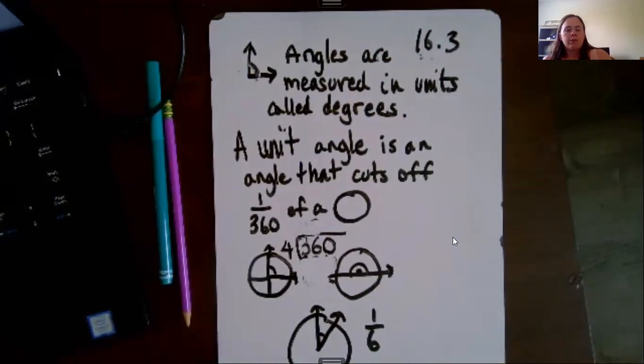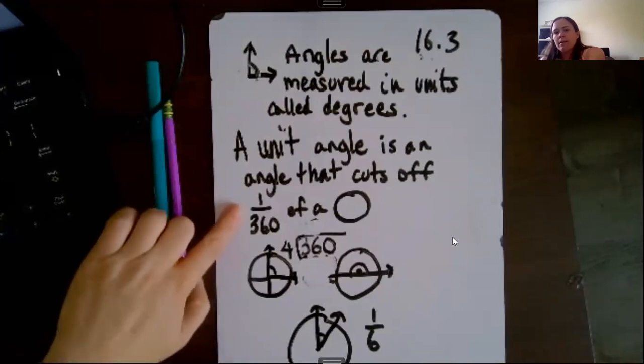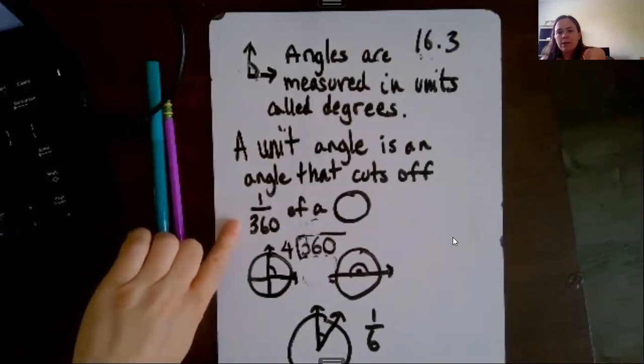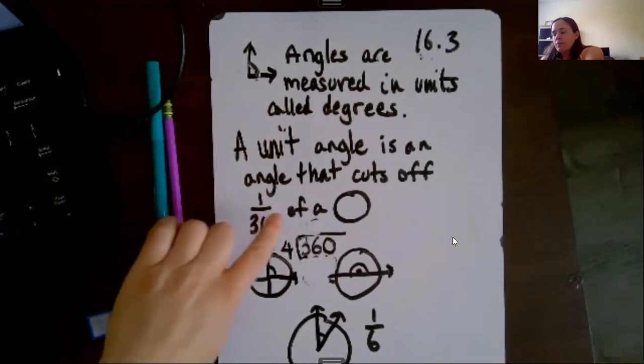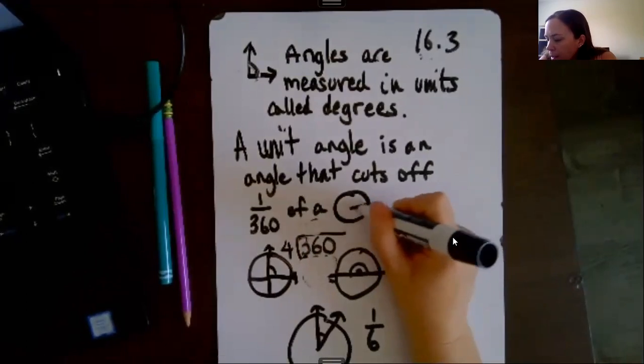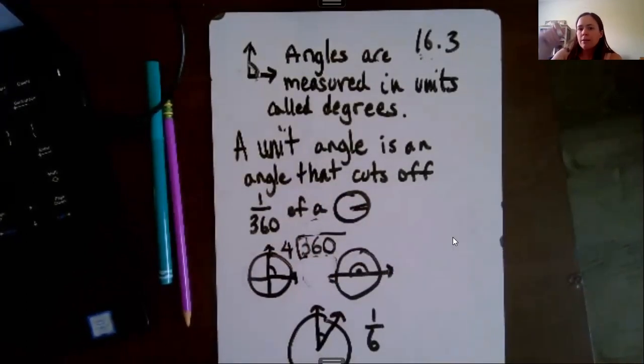And we usually use a circle to talk about a whole unit and that's 360 degrees. So a unit angle, just like a unit fraction, is one out of 360 degrees. So it'd be like a little teeny tiny angle, 360 of those make up a circle.